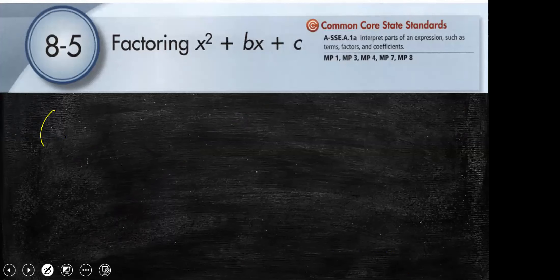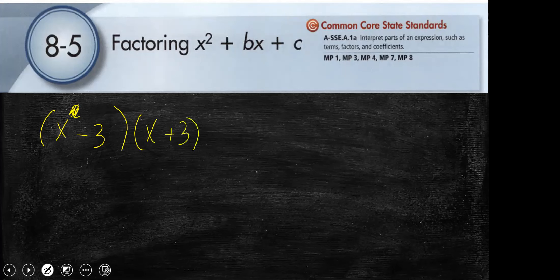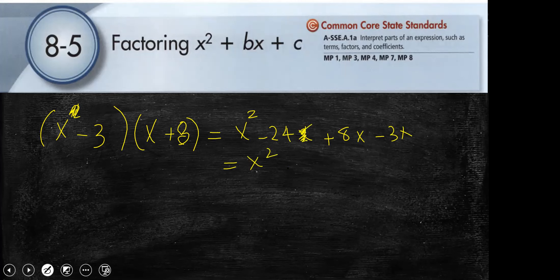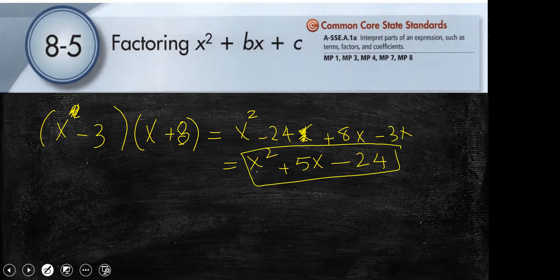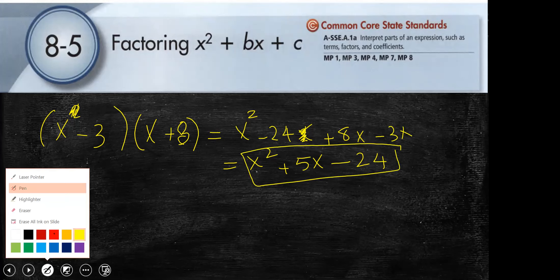For example, x minus 3 times x plus 8 — if you're multiplying them, you will get x squared plus 5x minus 24. So look here: I have two factors, two binomials. I multiply them and I get this trinomial.